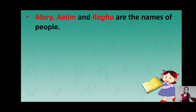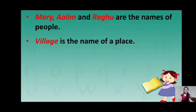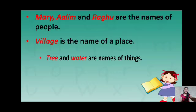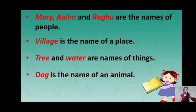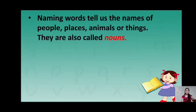Mary, Alim and Raghur are the names of people. Village is the name of a place. Tree and water are names of things. Dog is the name of an animal. So, naming words tell us the names of people, places, animals or things.